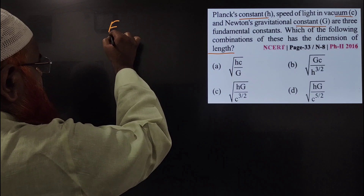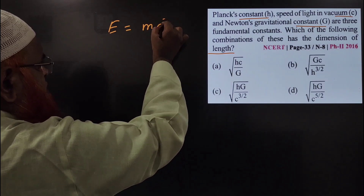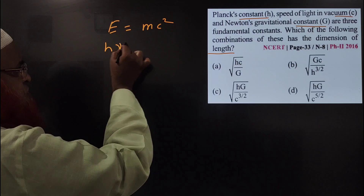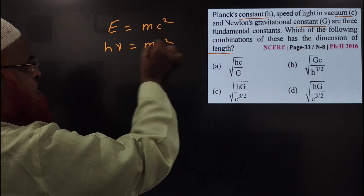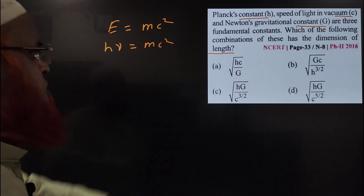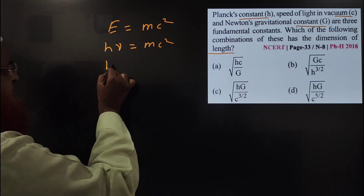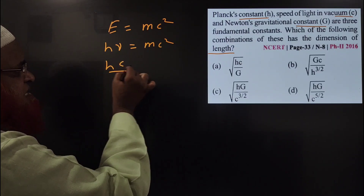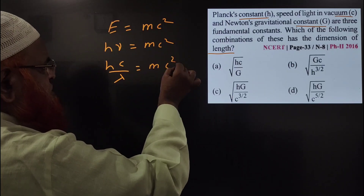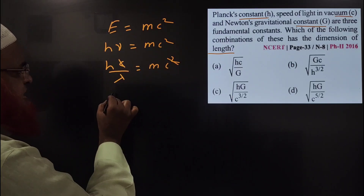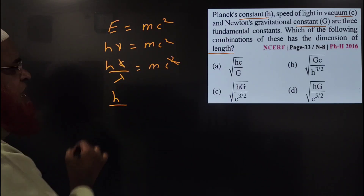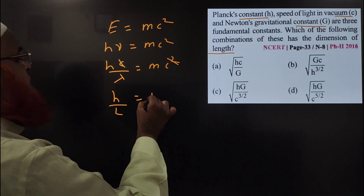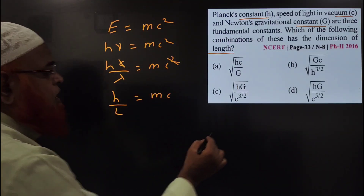You know energy E equals MC² (Einstein) and also E equals H·ν (Planck). So H·ν equals MC². Since ν equals C by λ, we get H·C by λ equals MC². The C terms cancel, giving H by λ equals MC. Since λ is a wavelength, its dimension is length L, so H by L equals MC.